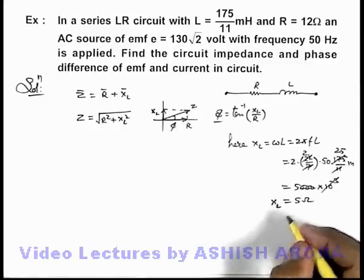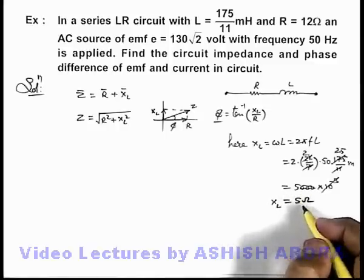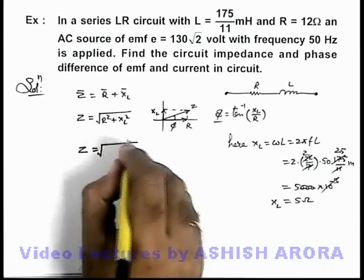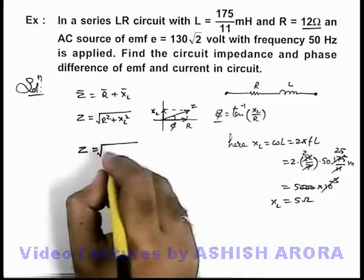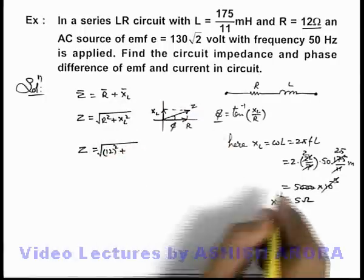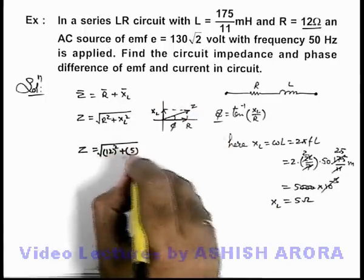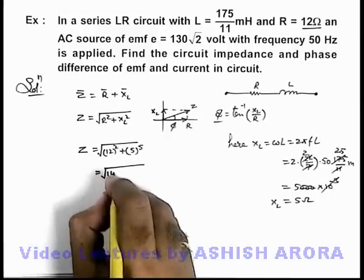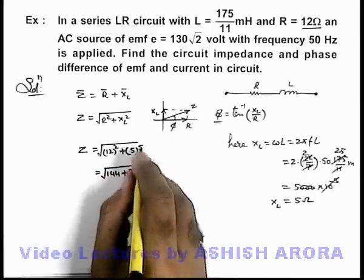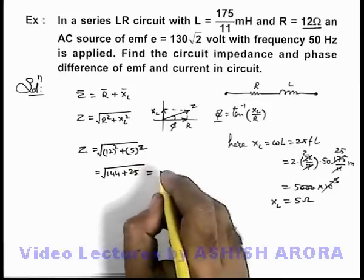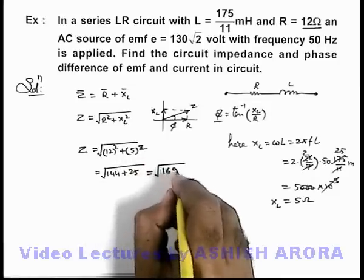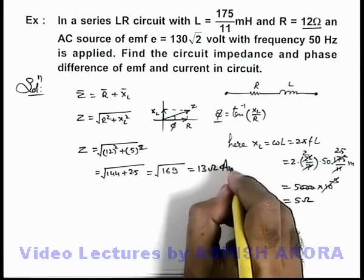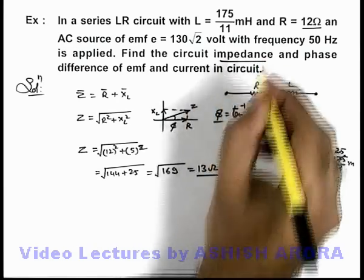So the value of inductive reactance is 5 ohm. The impedance of this circuit will be root of R squared plus XL squared — resistance is given as 12, so 12 squared plus 5 squared, which is root of 144 plus 25, that is root of 169, which equals 13 ohms. This is the answer to the problem for the impedance of the circuit.